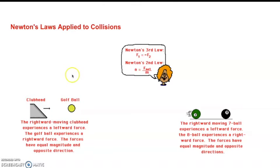Let's look at how those can be applied to collisions. So we're taking a golf club and we're hitting a golf ball. The club's moving rightward and it experiences a leftward force when it hits the golf ball. The golf ball experiences a rightward force. The forces have equal magnitude in opposite directions, so the force that the club puts on the ball is equal to the one that the ball puts on the club.